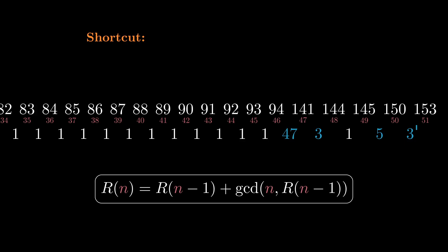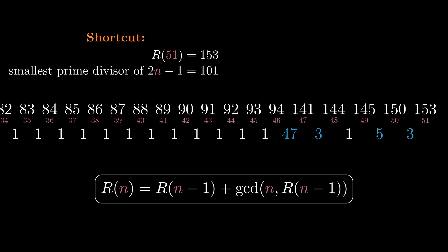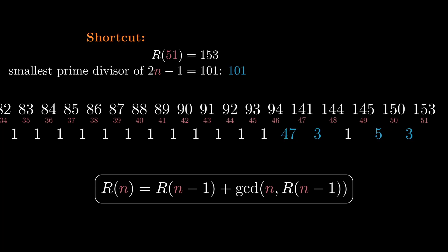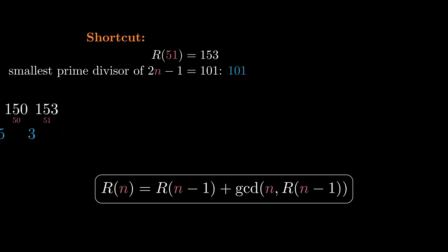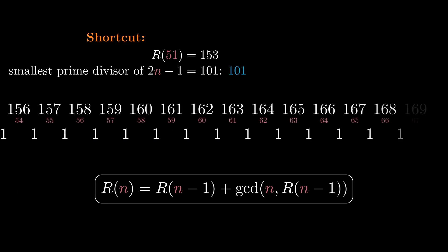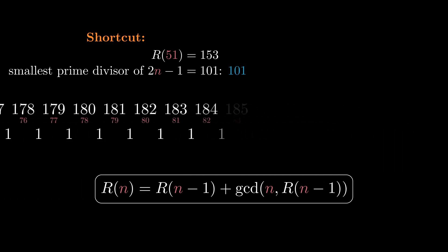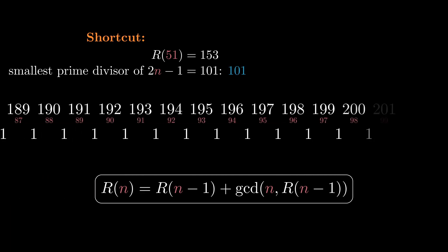For example, this 3 is the increase for index n equals 51. To use the shortcut, we determine 2n minus 1, which is 101. Then we find its smallest prime divisor. Since 101 is prime, its smallest prime divisor is itself. This is the next GCD that will appear that isn't 1. And sure enough, when we compute more numbers of the sequence using the recurrence, the GCDs are all 1 until we see 101.